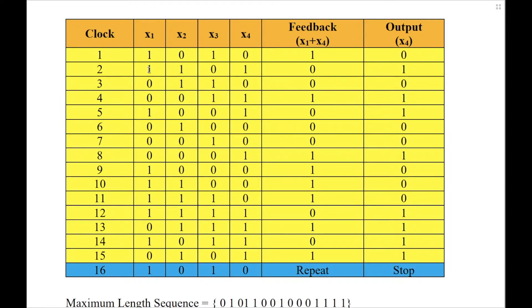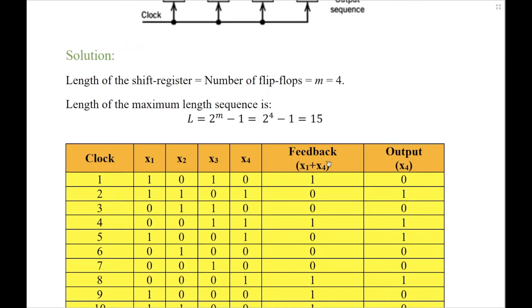This has to be done every single clock. For clock 2, we have the content 1101. Feedback is x1 plus x4: 1 plus 1 modulo-2 is 0. Output is x4, which is 1 again. In the next clock, I once again take the feedback to the x1 column and shift the previous contents of x1, x2, and x3 to the current x2, x3, and x4. I compute the feedback: here it is 0 plus 0, therefore 0, and the output is the x4 content which is 0. You have to continue for the number of clocks equal to the length of the sequence, which is 15.